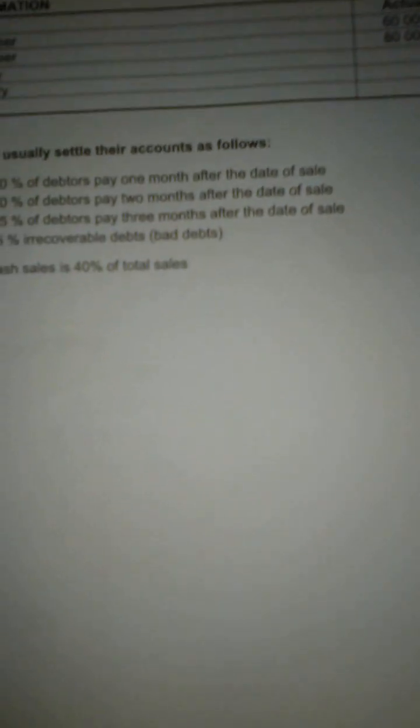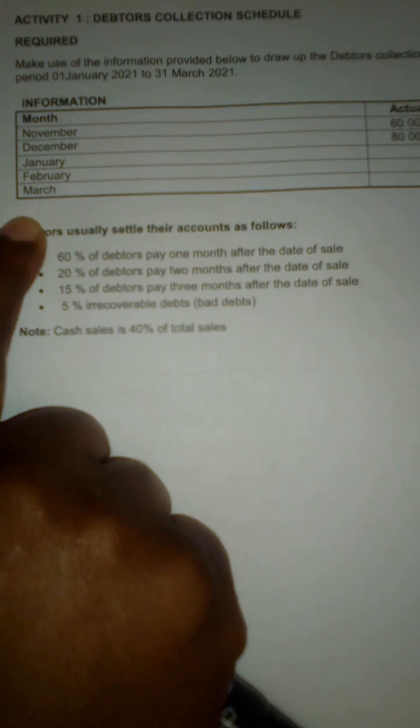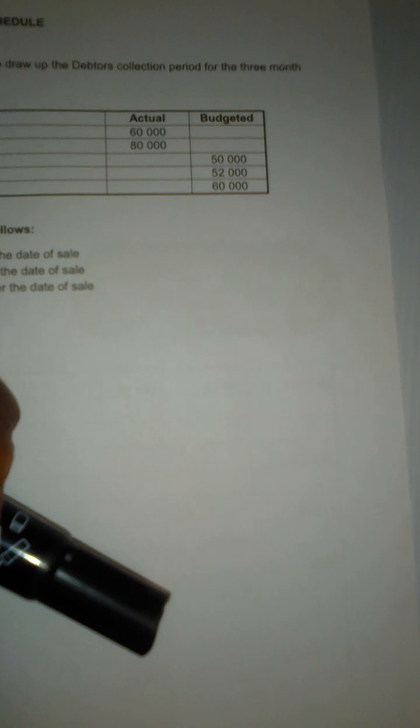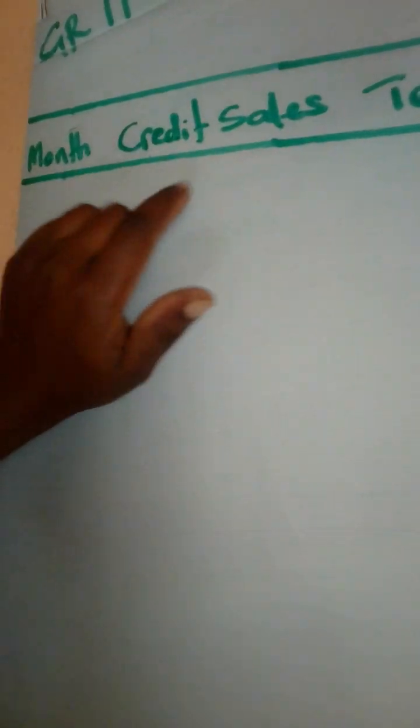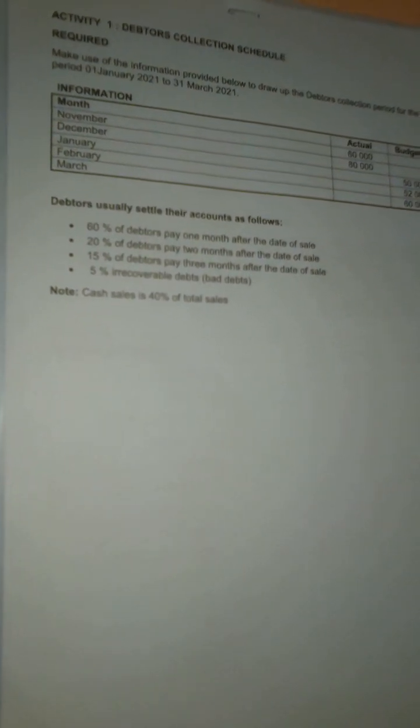We are doing this debtors collection schedule to find out, from all the transactions that took place from November up to March, how much money we are going to receive in our budget period running from January to March. Our template has the month, credit sales, terms of credit, and the collection period columns for January, February, and March. You need credit sales and the terms of credit to complete the schedule.